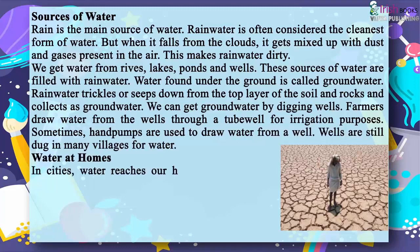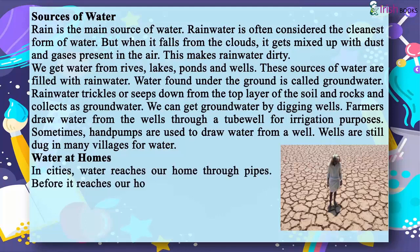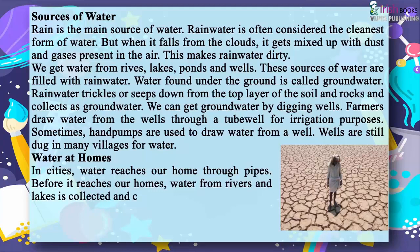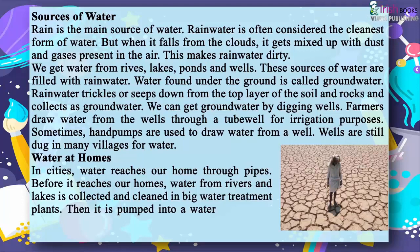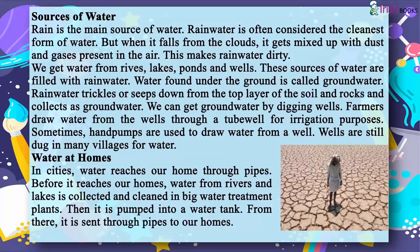Water at homes. In cities, water reaches our home through pipes. Before it reaches our homes, water from rivers and lakes is collected and cleaned in big water treatment plants. Then it is pumped into a water tank, and from there it is sent through pipes to our homes.